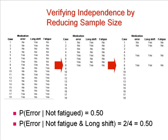If data exists, conditional independence can be verified by selecting the population that has a condition and verifying that the product of marginal probabilities is equal to the joint probability of the two events. For example, in the table to the left, 18 cases from a special unit prone to medication errors are presented.